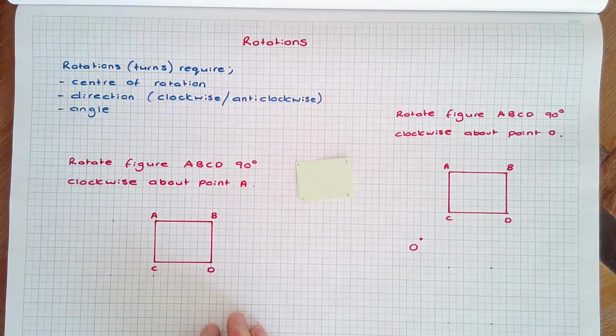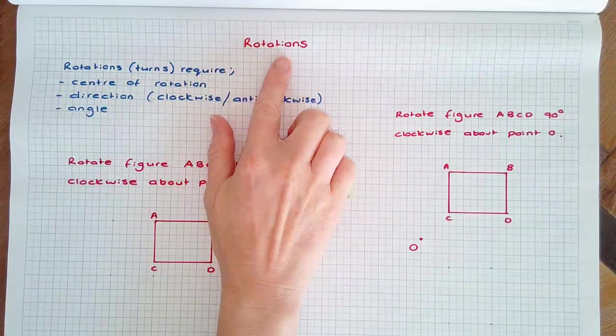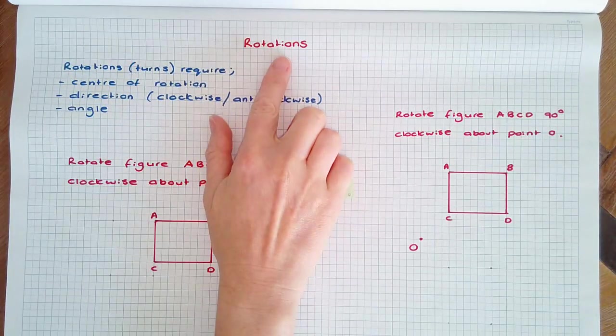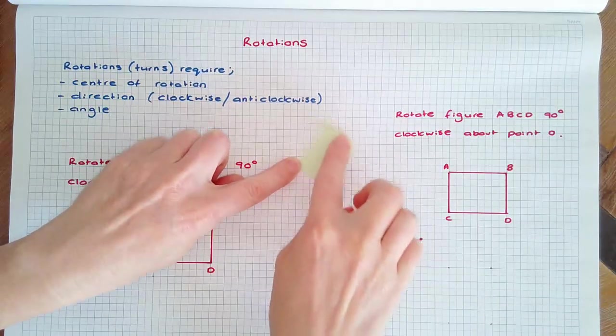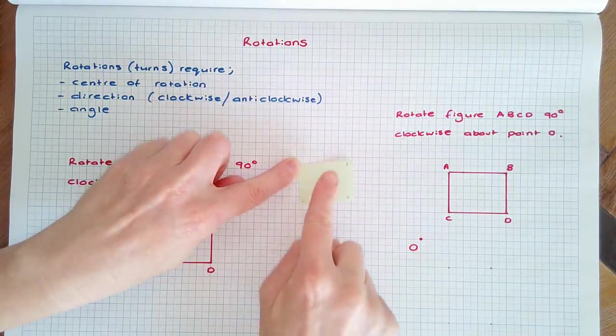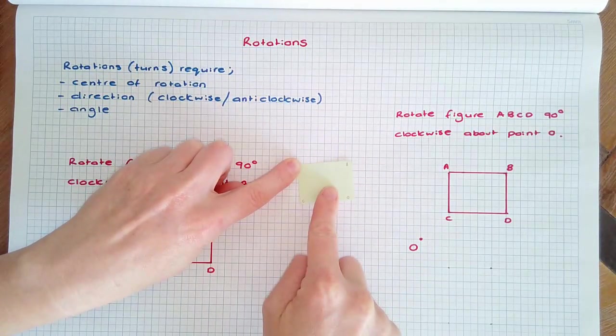In this video we're going to have a look at a type of transformation called rotation. A rotation turns a figure about a set point called the centre of rotation. The size or the shape of the figure does not change.